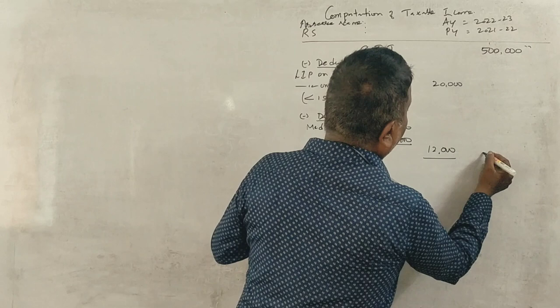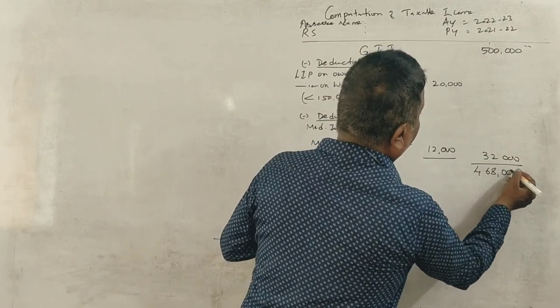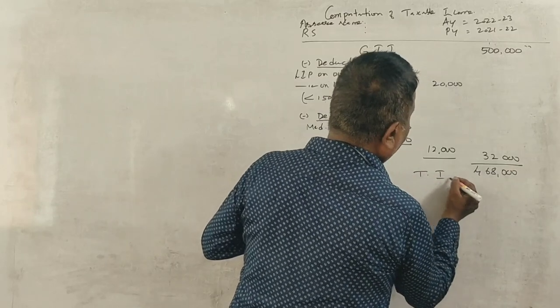So total how much deduction will you get? 32,000. And the taxable income is 4,68,000. This is called the taxable income.